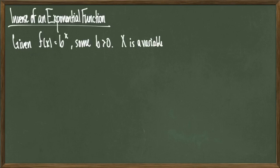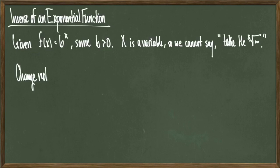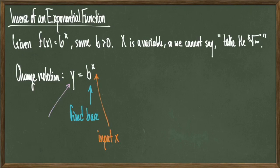Given an exponential function f(x) = b^x for some b > 0, we can't just simply take the x root of both sides when trying to solve this because x is a variable, not necessarily a whole number. To move forward, I'm going to change notation. I'm going to let y = b^x instead of f(x) = b^x, and then I'm going to name the parts: my fixed base b, my input x, and my output y.